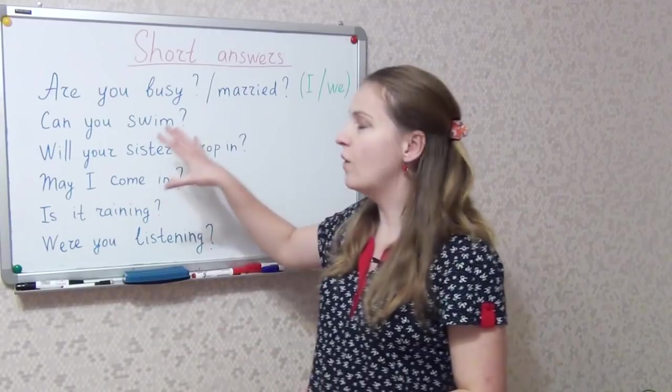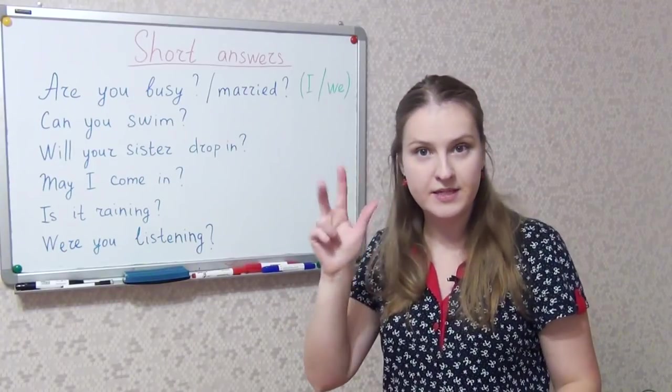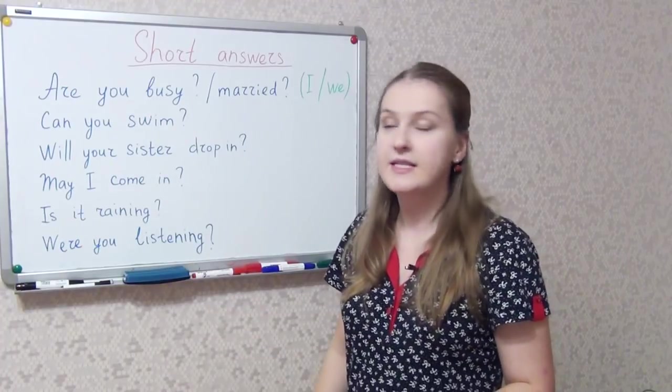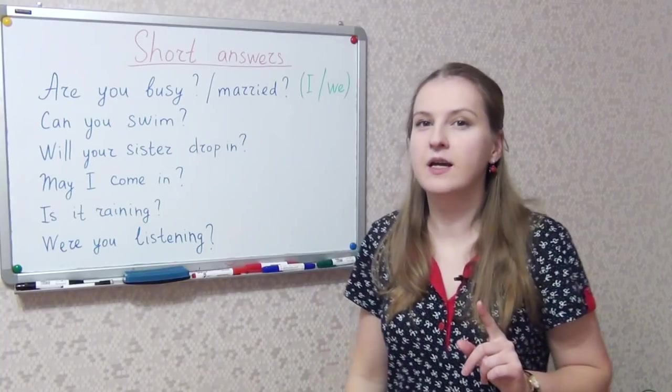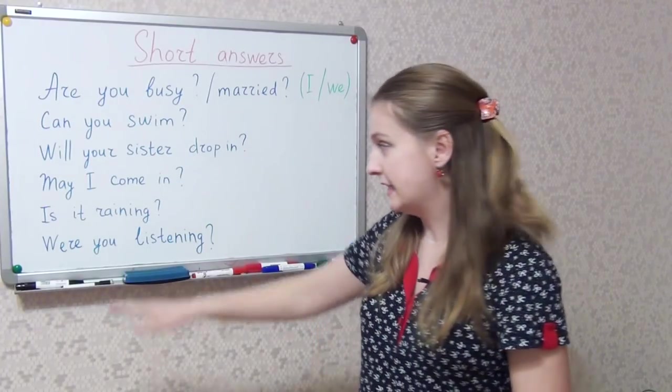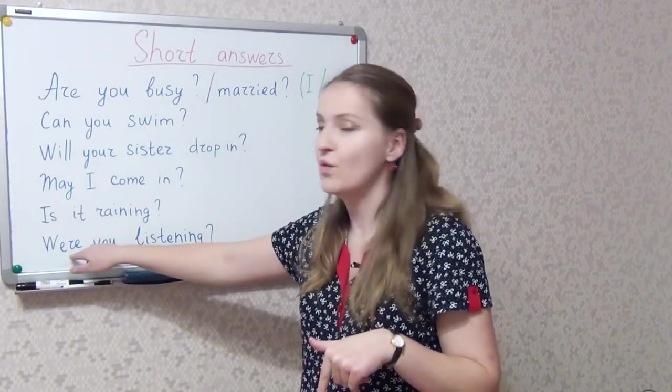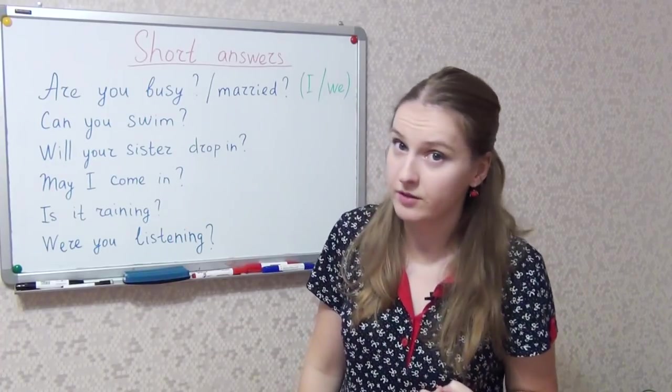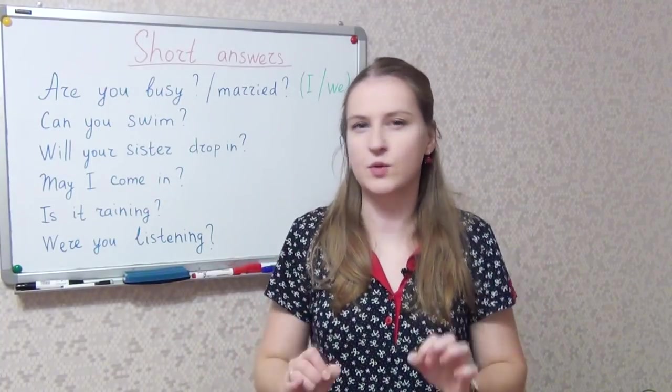So here, when you formulate your short answer, and you fill in the last position, the third position, auxiliary verb, modal verb, or a form of the verb to be, you usually take the first word from the question. However, do not forget that sometimes you need to adapt the auxiliary verb to the personal pronoun you use in the answer. Like here, were you listening? Yes, I was. We change were into was, because we use I, and I demands using was, not were. A couple of more examples, try to think fast and give your short answers.